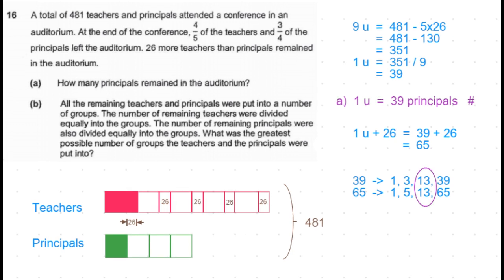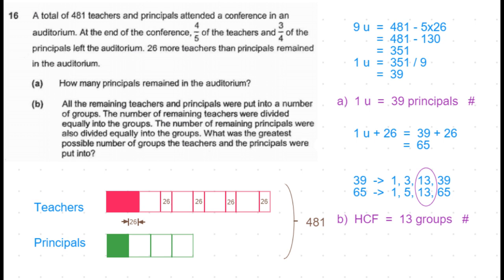The largest common factor between 39 and 65 is 13. This means the teachers can be divided into 13 groups, with each group having 5 teachers. Similarly, the principals can be divided into 13 groups, with each group having 3 principals. So 13 is the largest number of groups — that's the answer for part B.